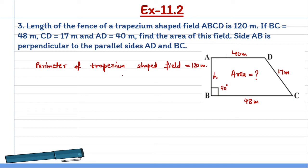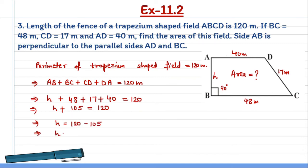First, we write the perimeter as 120. Perimeter is the sum of all sides. That is AB plus BC plus CD plus DA is equal to 120 meters. So, the length of AB here is h, plus BC is 48, plus CD is 17 meters, plus DA is 40 meters, equals 120. That is, h plus 105 meter equals 120. So, h will be equal to 120 minus 105, that is, h is equal to 15 meter. So AB is 15 meter.